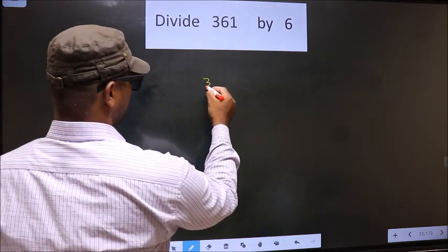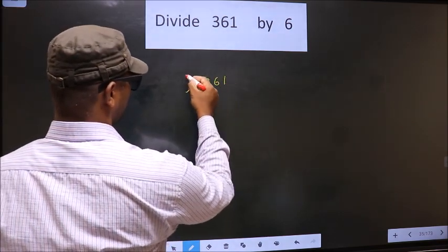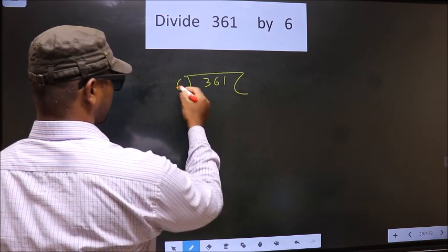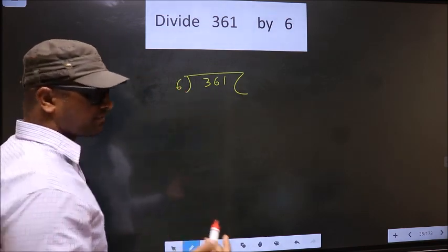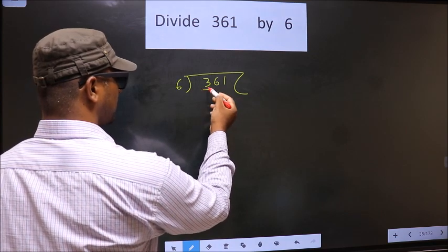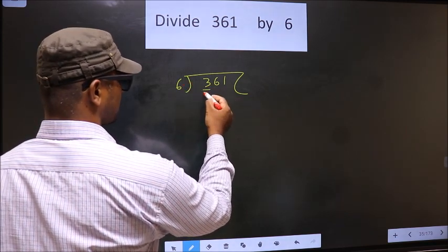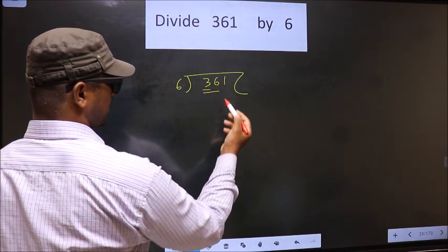That is 361, divided by 6. Okay, next. Now here we have 3. 3 is smaller than 6, so we take two numbers, that is 36.